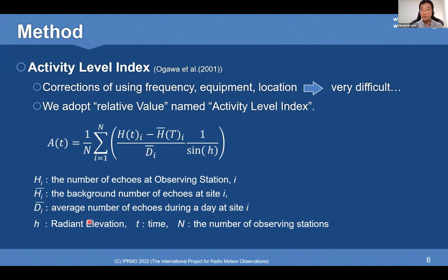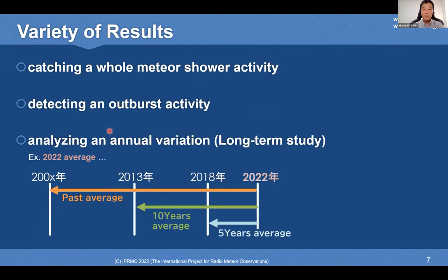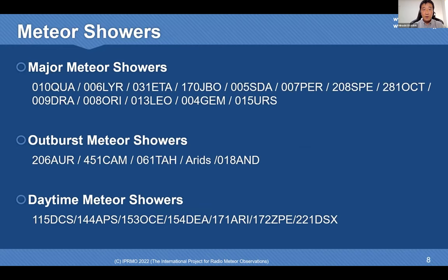Using the Activity Level Index, IPRMO tried to capture the whole meteor shower activity, detect outburst activity, and analyze annual variation. IPRMO has accumulated a lot of data since 2001. As a result, we captured annual variation: past average, 10-year average, and 5-year average. IPRMO analyzed many meteor showers including major showers, outbursts, and daytime meteor showers.